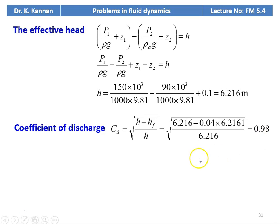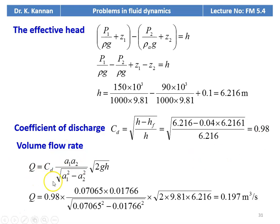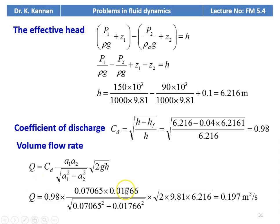The coefficient of discharge equals 0.98. The volume flow rate Q = CD × (A1 × A2) ÷ √(A1² − A2²) × √(2GH). Substituting: Q = 0.98 × (0.07065 × 0.01766) ÷ √(0.07065² − 0.01766²) × √(2 × 9.81 × 6.216) = 0.197 cubic meters per second. Discharge equals 0.197 m³/s.